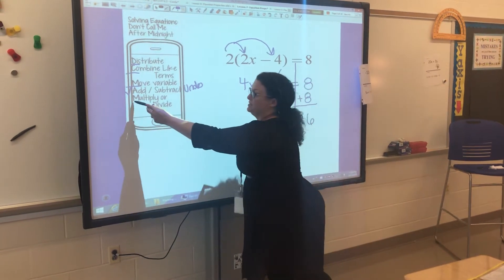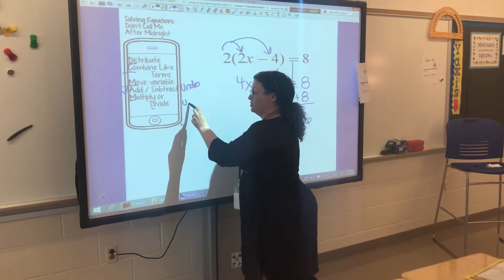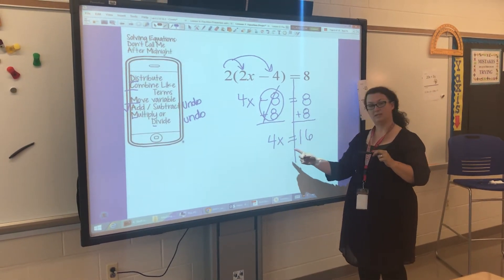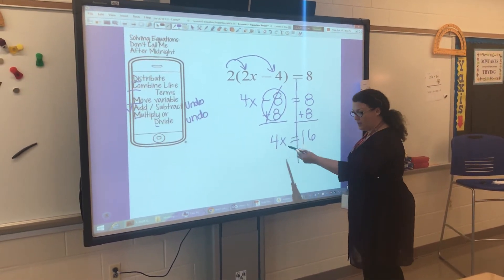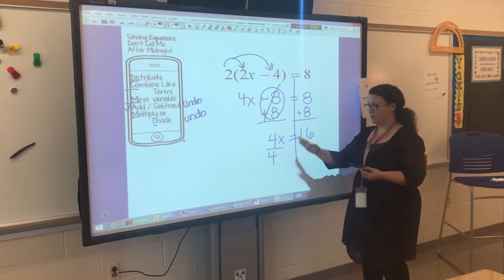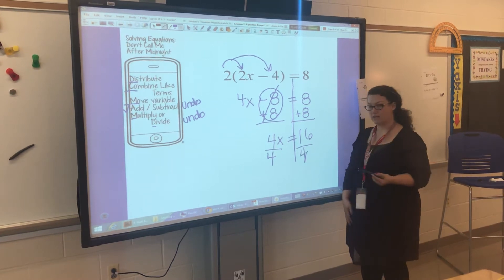The next step is multiply or divide. That's also an undo step. We're using inverse operations to undo 4 times x. So the inverse of multiplying is dividing. I'm going to divide that 4 away. Whatever I do to one side, I do on the other side.